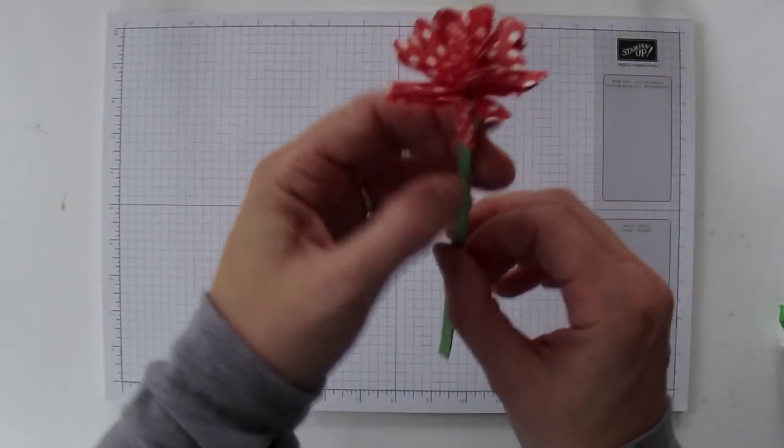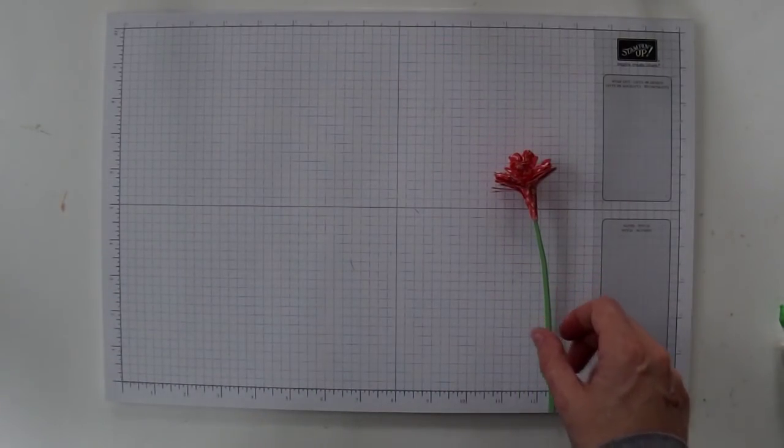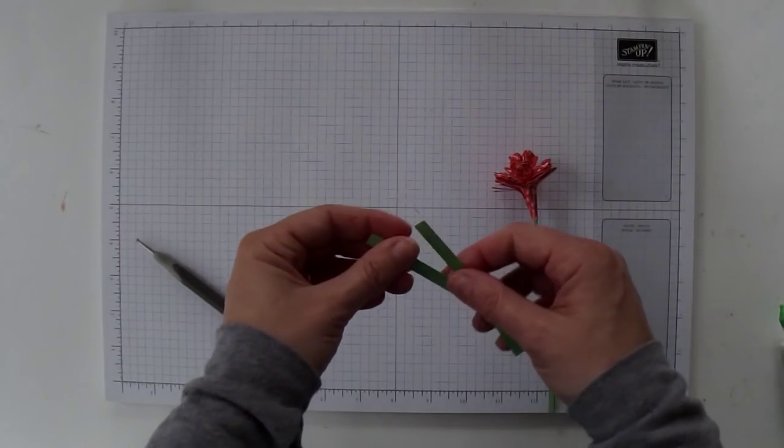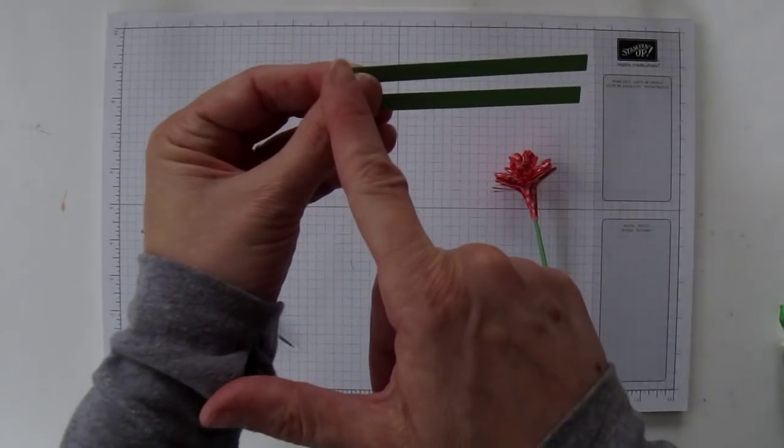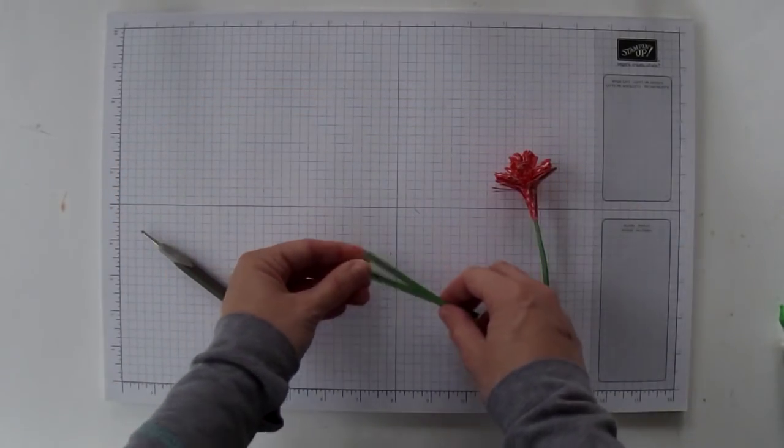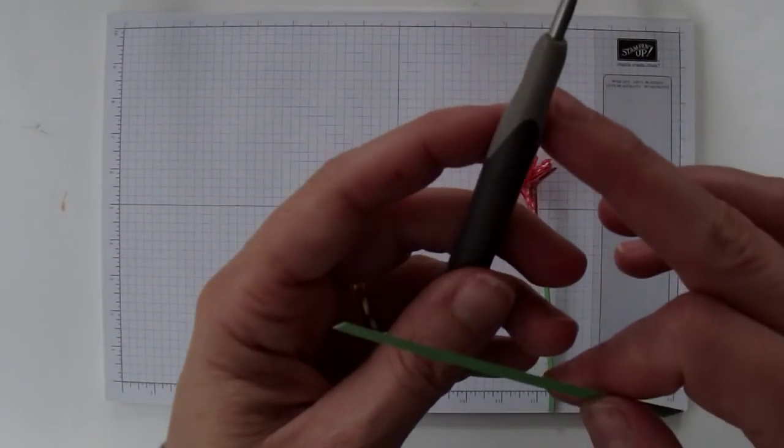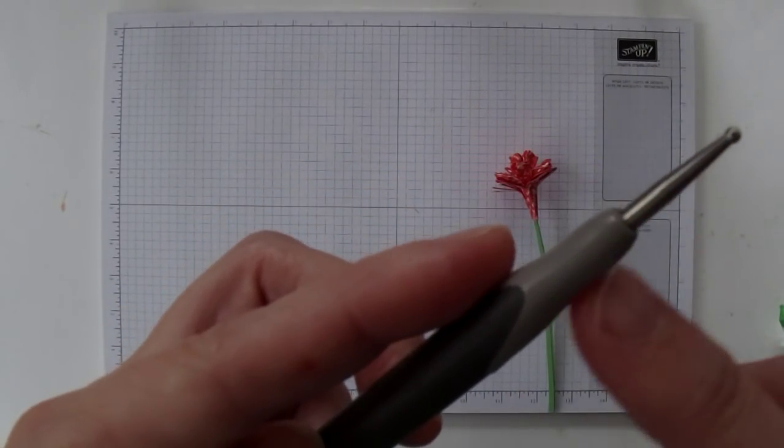And then that should be sealed in place. And now let's make some little curly leaves. I've got two pieces of cardstock cut to three inches by a quarter inch. I'm going to take my stylus tool, not the really fat part and not the really skinny metal part.